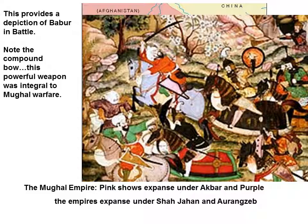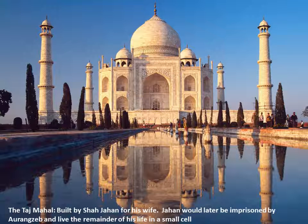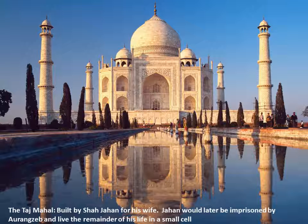Some of the greatest leaders in the Mughal dynasty were individuals like Babur and Akbar. But actually, the most impressive architectural development of the Mughals was the Taj Mahal, which was built by Shah Jahan for his wife. Interestingly, Jahan was actually imprisoned by his son Aurangzeb, who became perhaps the greatest of the Mughal leaders.